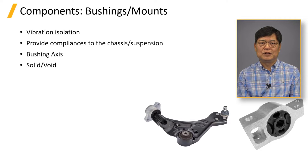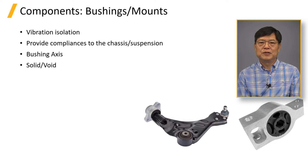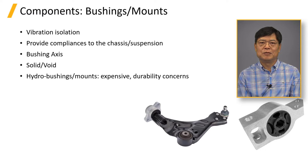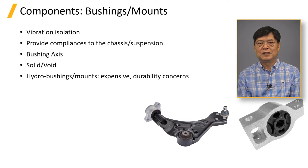Dramatic changes in bushing rate can be achieved by solid and void shape design. Elastomeric bushings have about 5 to 6 degree loss angle to represent damping. To boost the loss angle up to 70 to 80 degrees, hydro bushings can be used for suppressing shake issues. However, they are more expensive and have a durability concern for oil leakage.